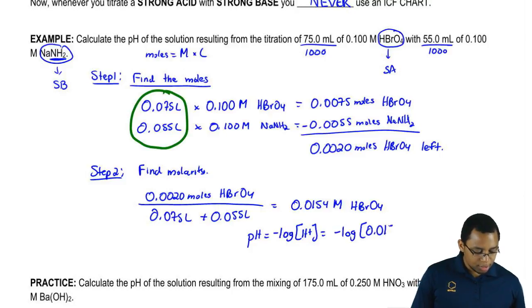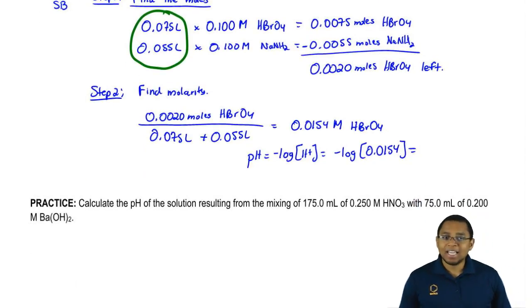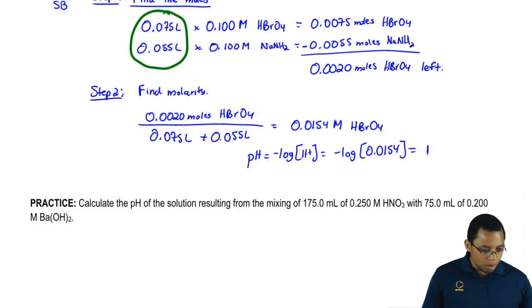We plug in the concentration here and at the end, scroll up some, at the end what is that going to give me? My pH will be 1.81.